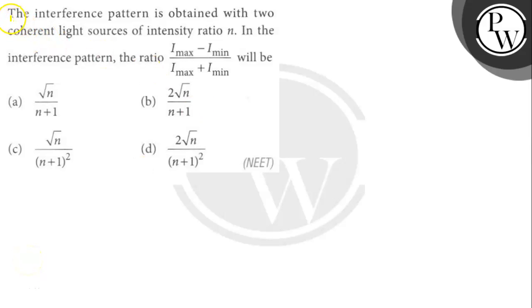Hello, let's hit the question. The question says here, the interference pattern is obtained with two coherent light sources of intensity ratio n. In the interference pattern,